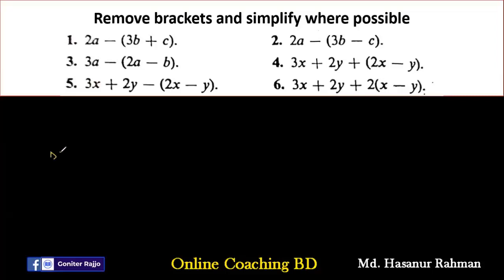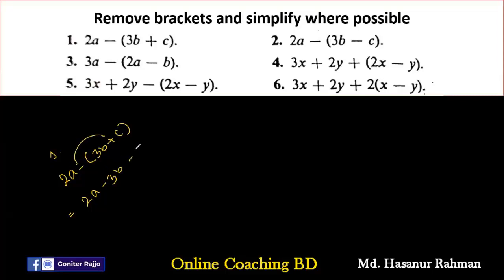Number 1 says: 2a minus (3b plus c). So we have to remove the brackets. Look: 2a, then minus 3b, and minus into plus gives minus c. That means if we multiply a positive number by negative, it will be a negative number.